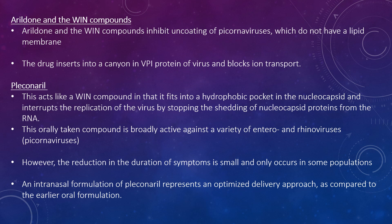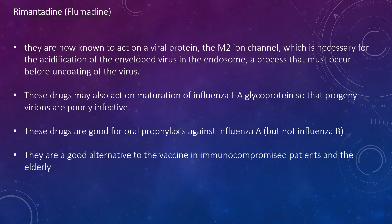An intranasal formulation of pleconaril also represents an optimised delivery approach compared to earlier oral formulations. Looking at rimantadine and flumadine, these are now known to act on a viral protein. The M2 ion channel is necessary for the acidification of the envelope virus in the endosome, a process that must occur for uncoating of the virus. These drugs can also affect the maturation of influenza HA glycoprotein, so the progeny virions are not fully infectious. They are good for oral prophylaxis against influenza A but not influenza B, and are a good alternative to the vaccine in immunocompromised patients and the elderly. Both of these drugs are licensed for use in the United States.